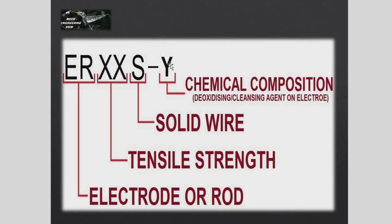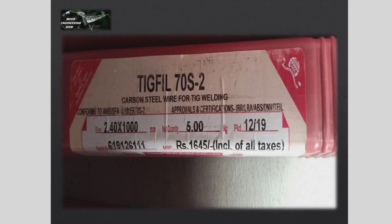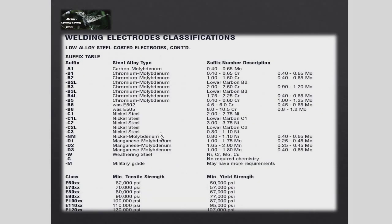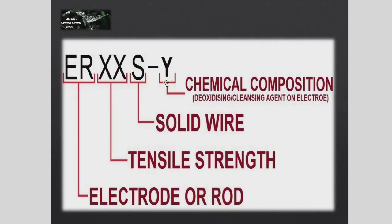The suffix digit — for example '2' in ER70S-2 — indicates the chemical composition. The numbers 1, 2, 3, 4, 5, 6 represent different chemical compositions based on carbon steel alloying content. For example, ER70S-2, ER70S-3, ER70S-4, ER70S-6. If you need a specific chemical composition or property, you choose the corresponding filler wire designation.